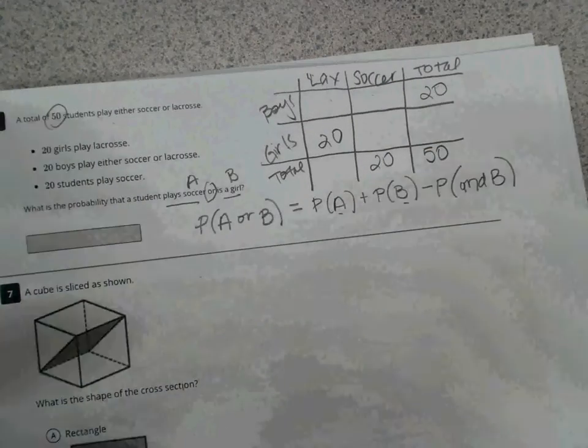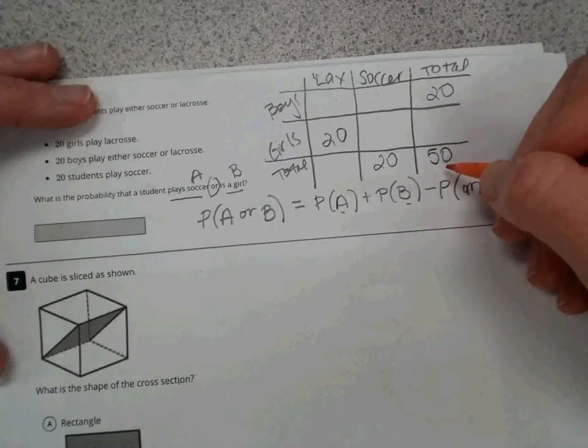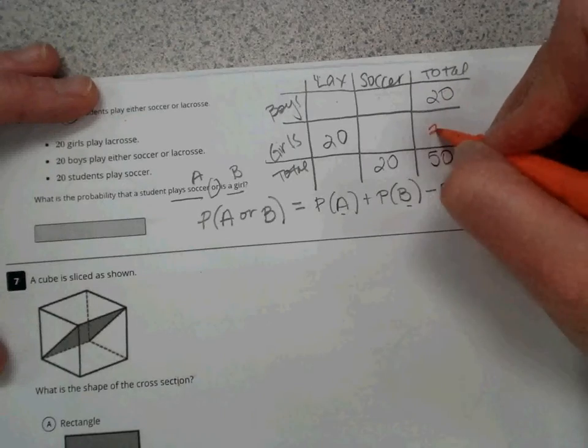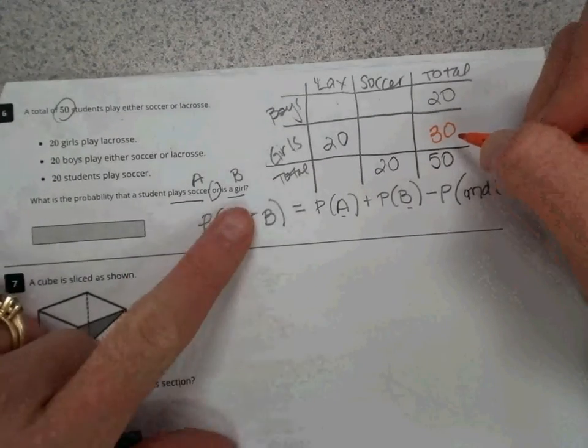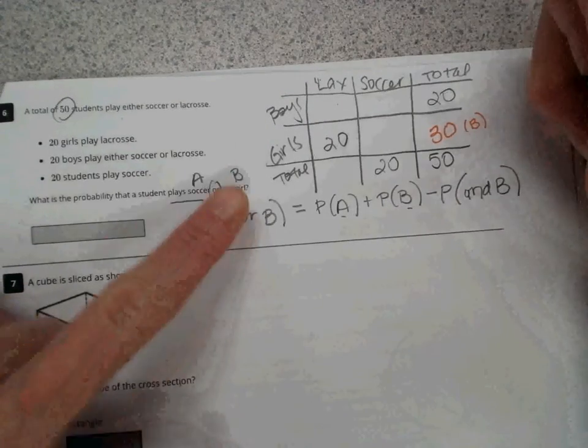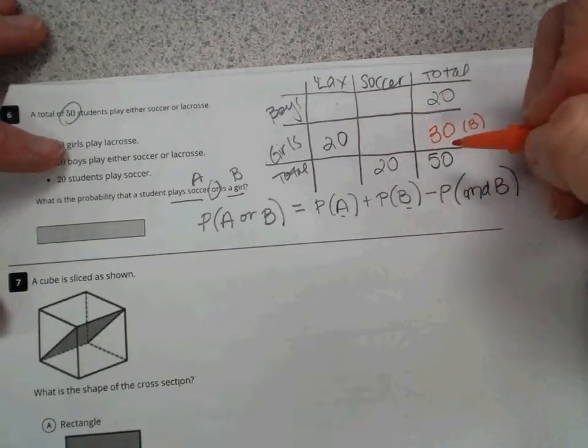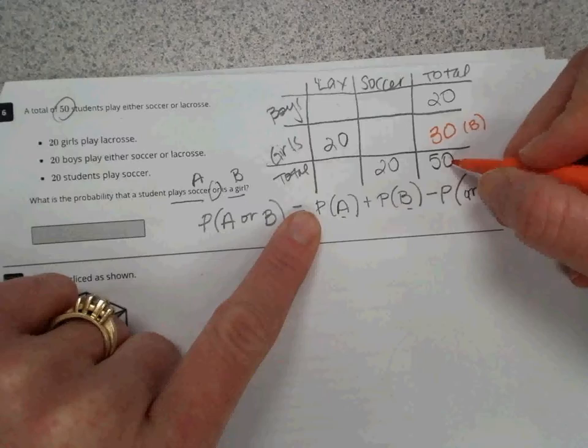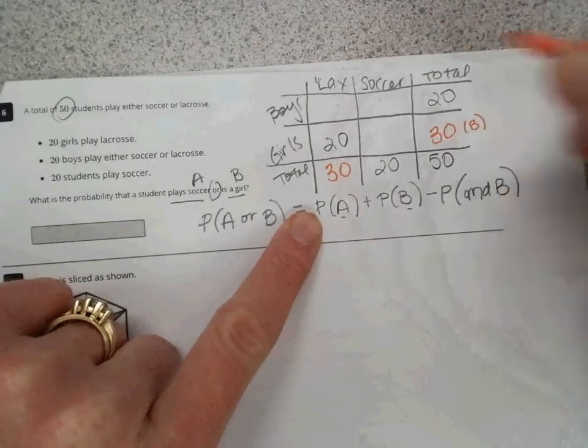From the given, anytime there's a row or column with two items given and a third missing, we can just subtract. So 50 minus 20, now we know there's a total of 30 girls, which we defined as event B, so that's going to play into our equation. And then we have this total row at the bottom. We have 50 total students, 20 that play soccer, so 30 students play lacrosse.